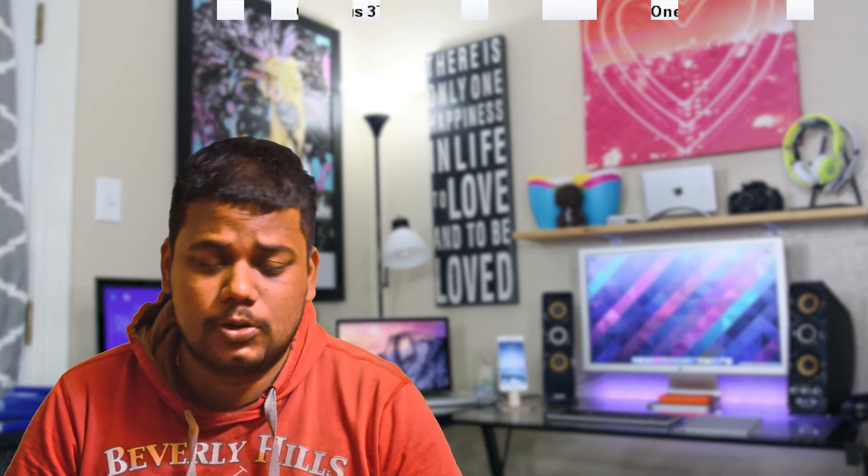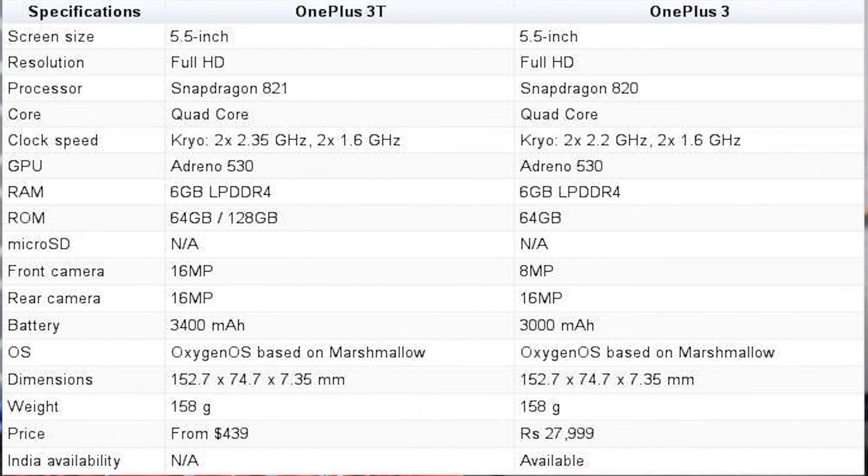Now for the front camera, OnePlus 3 has an 8 megapixel front camera, while OnePlus 3T has a 16 megapixel front camera. On the OnePlus 3T, both the front and rear cameras are 16 megapixel, so you get 16 megapixel on both sides compared to OnePlus 3.